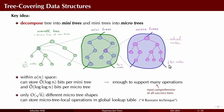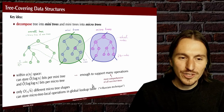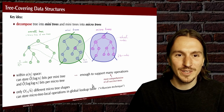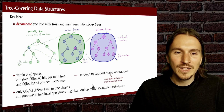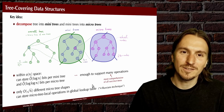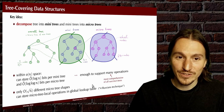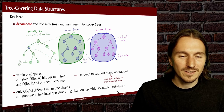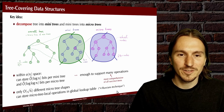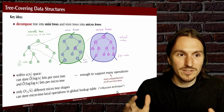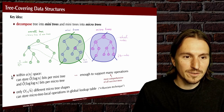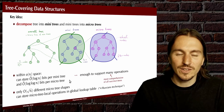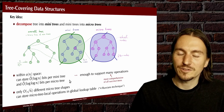Because micro trees are so small — at most log n over four nodes each — there are only root-n different shapes possible in a micro tree. That means you can list them all and spell out all results for all thinkable operations inside a micro tree in a global lookup table. This is known as the four Russians technique in data structures, and that's what makes tree covering work on the micro tree side.